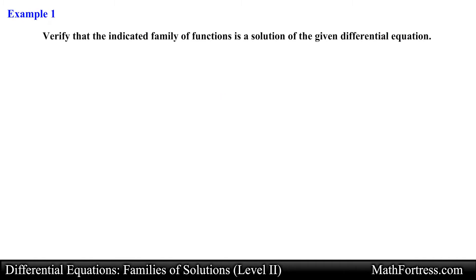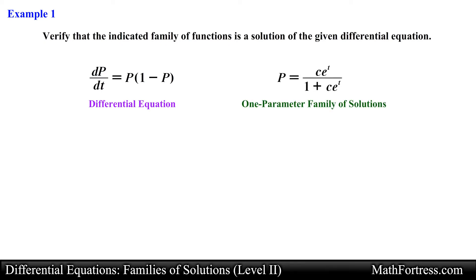Verify that the indicated family of functions is a solution of the given differential equation. The differential equation is the derivative of p with respect to t equals p times the quantity 1 minus p. The one-parameter family of solutions to verify is p equals c times e to the power of t over the quantity 1 plus c times e to the power of t. Notice that this family of solutions contains one parameter. Although it may seem like it contains two parameters — one in the numerator and one in the denominator — the same constant appears in both, so we are actually dealing with one parameter.